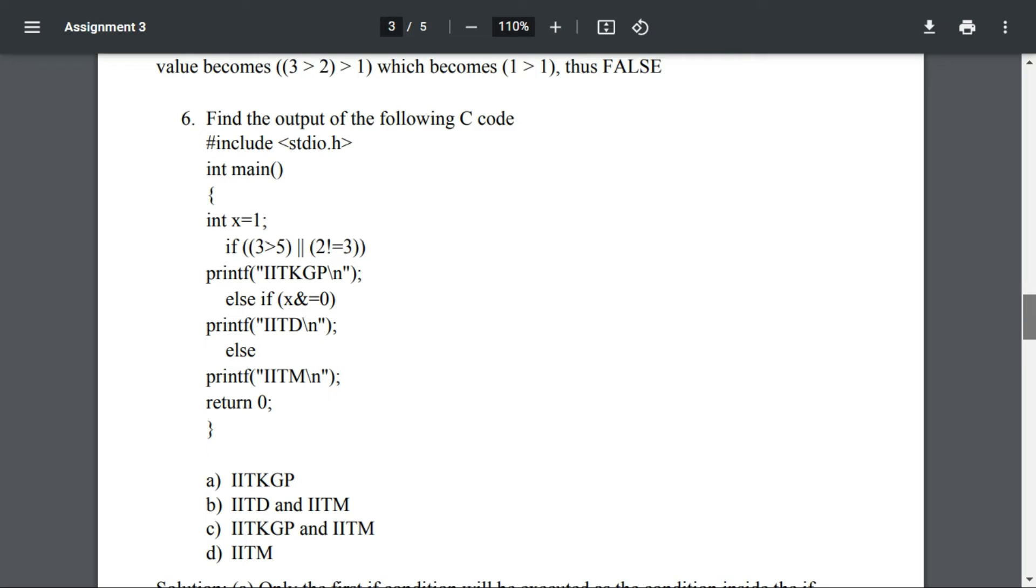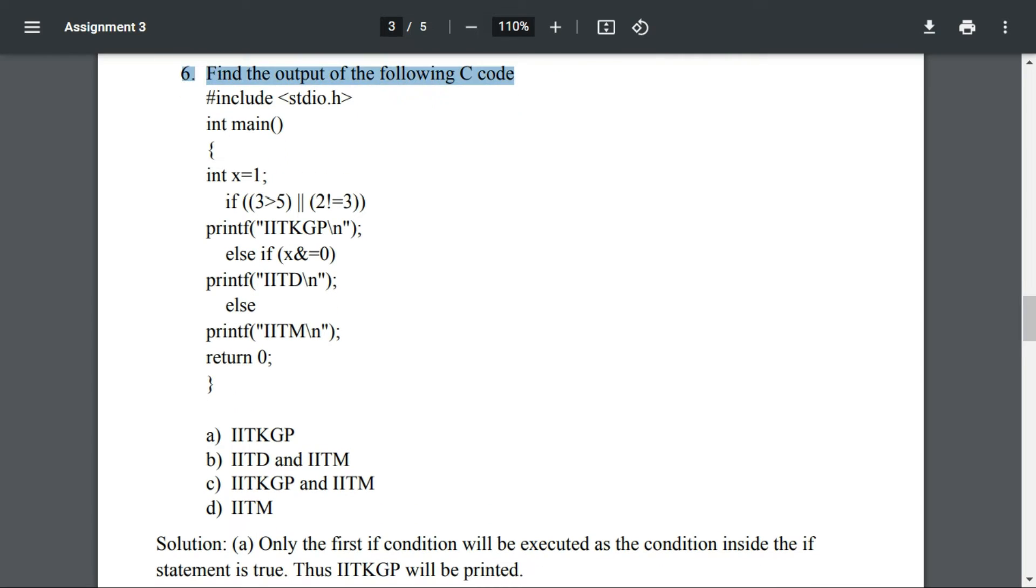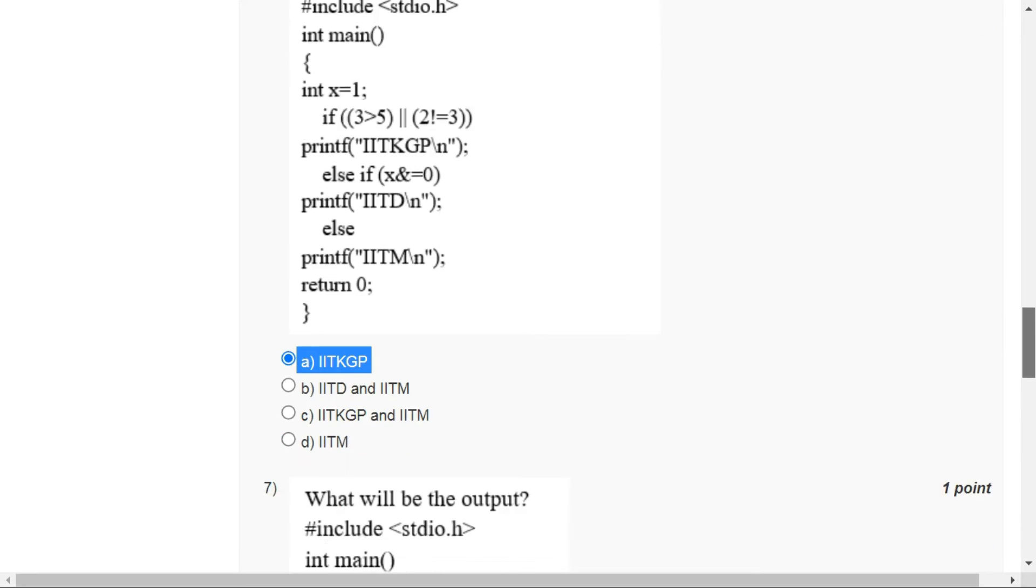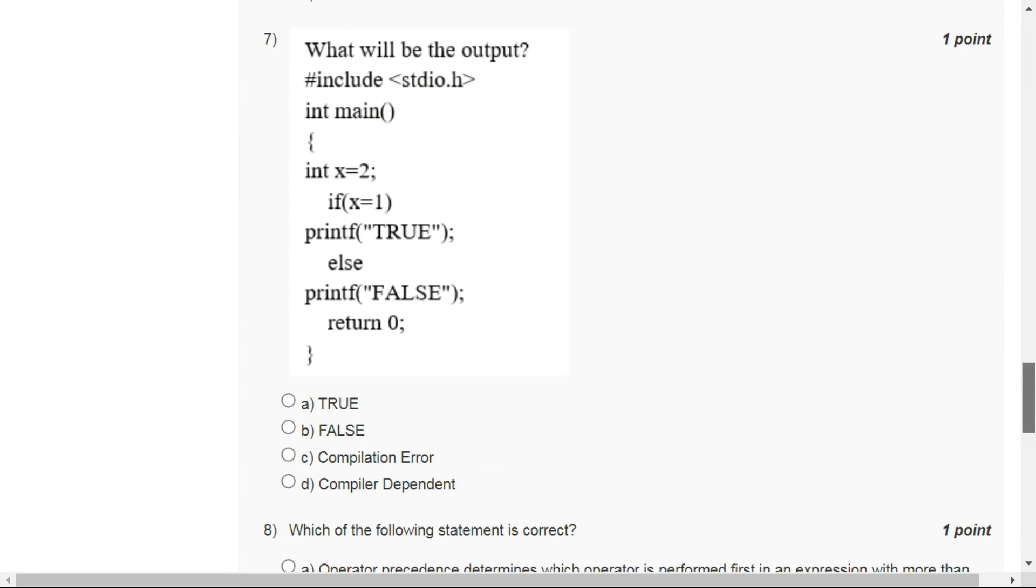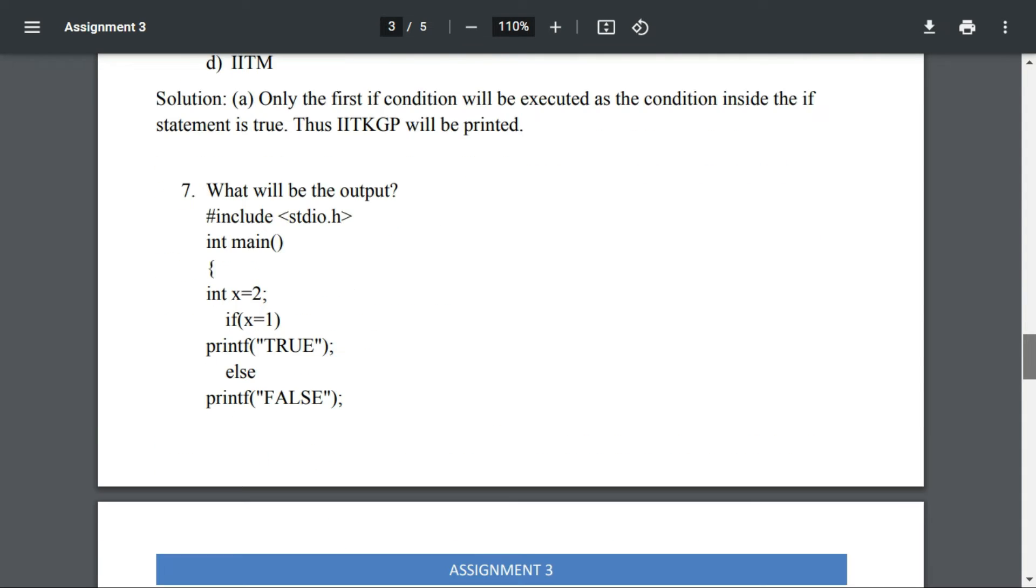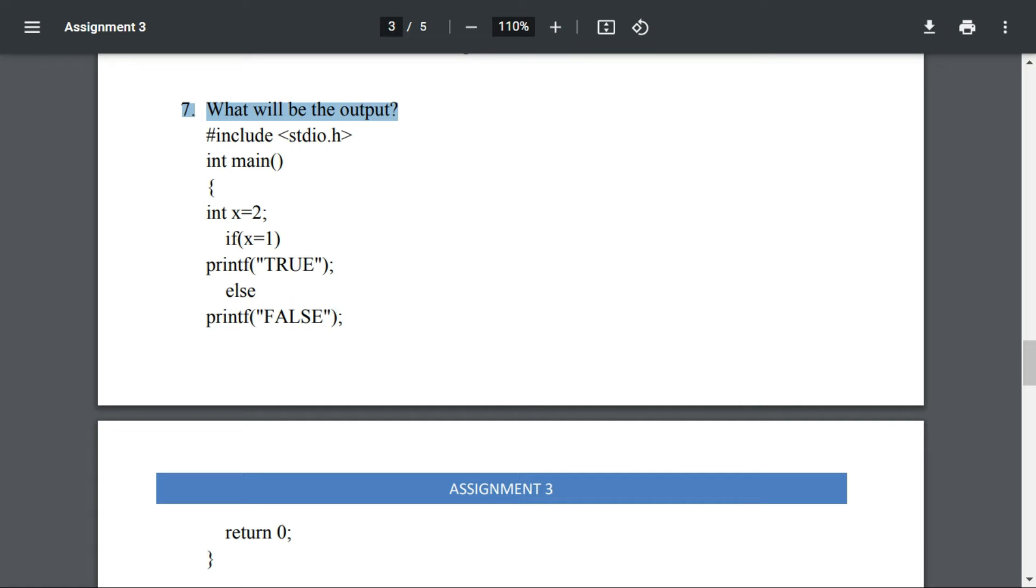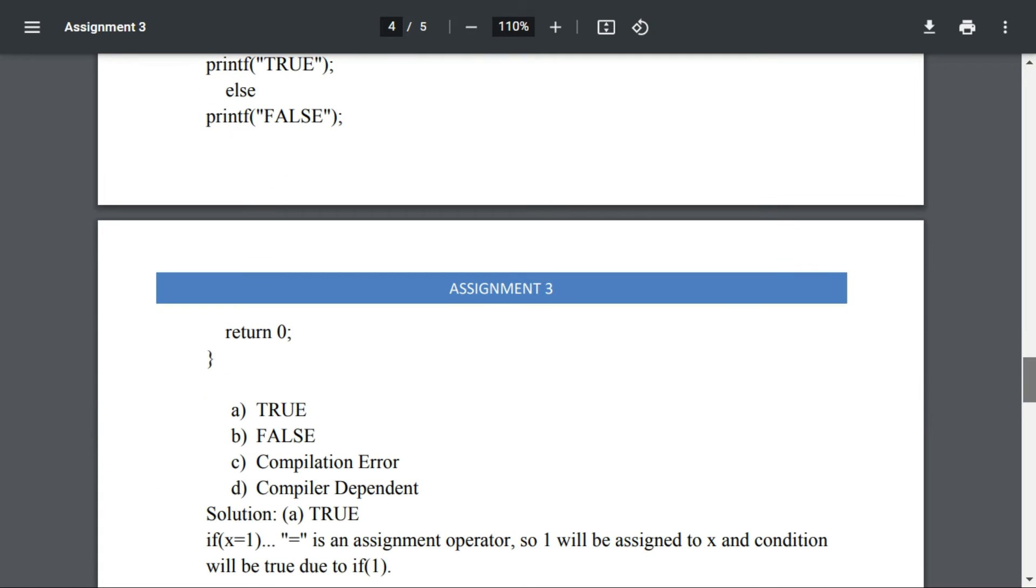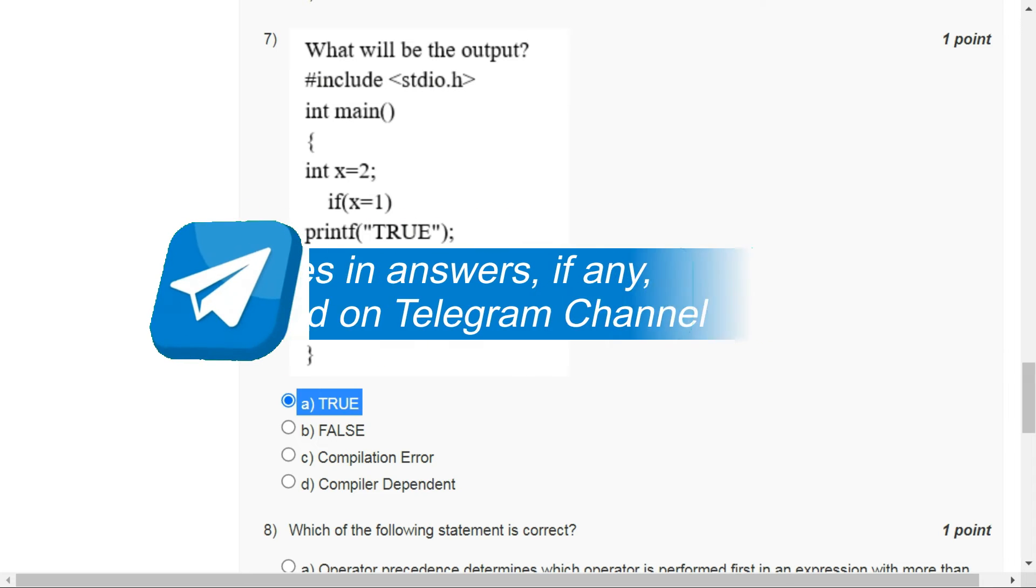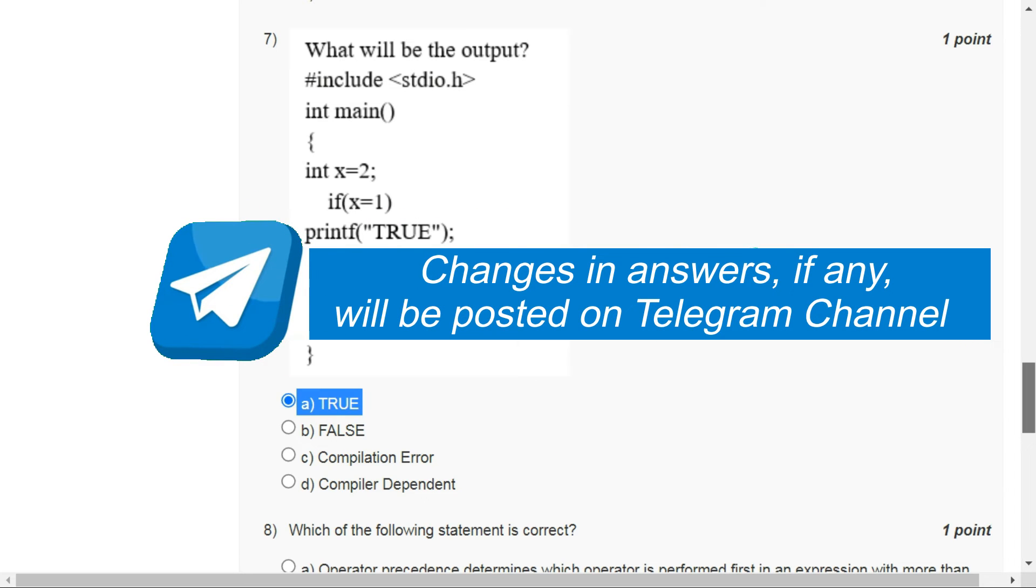Let's take a look at the solution of question number six. Option A is the correct answer because the value of this expression inside if is true. The correct answer is option A: true, because x assigned one is true because the value is assigned to x.